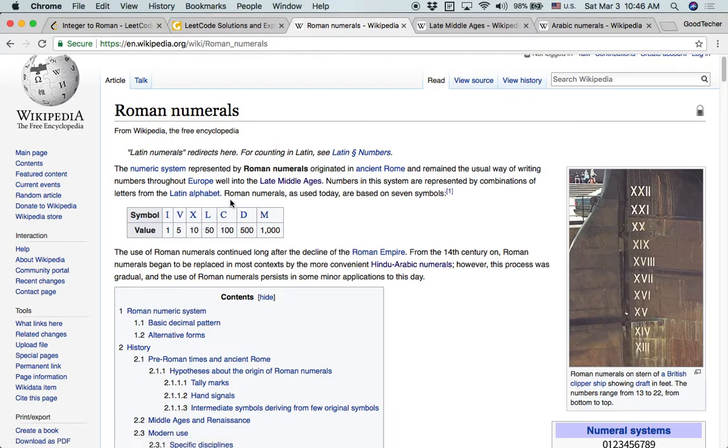So we see here, Roman numerals are based on 7 symbols. If we read in English, those letters I, V, X, L, C, D, M, they are matching with the Arabic numbers 1, 5, 10, 50, 100, 500, and 1000.